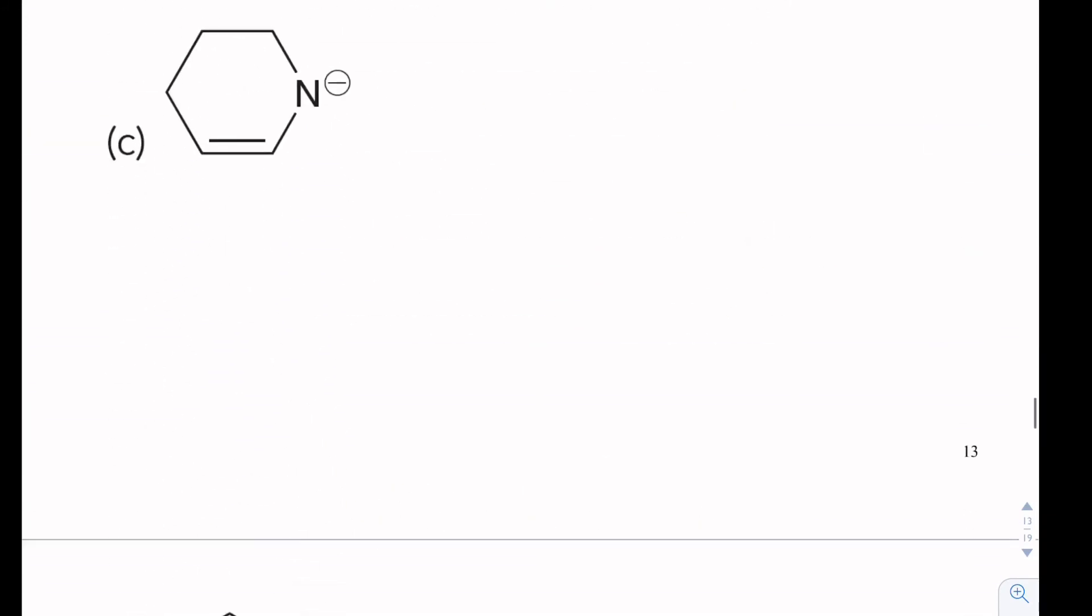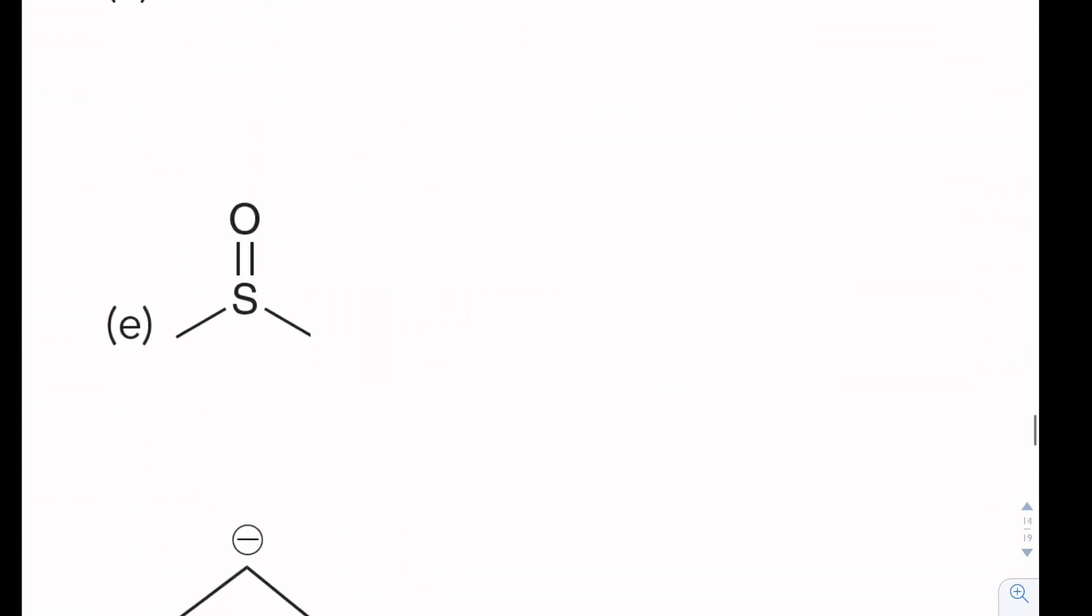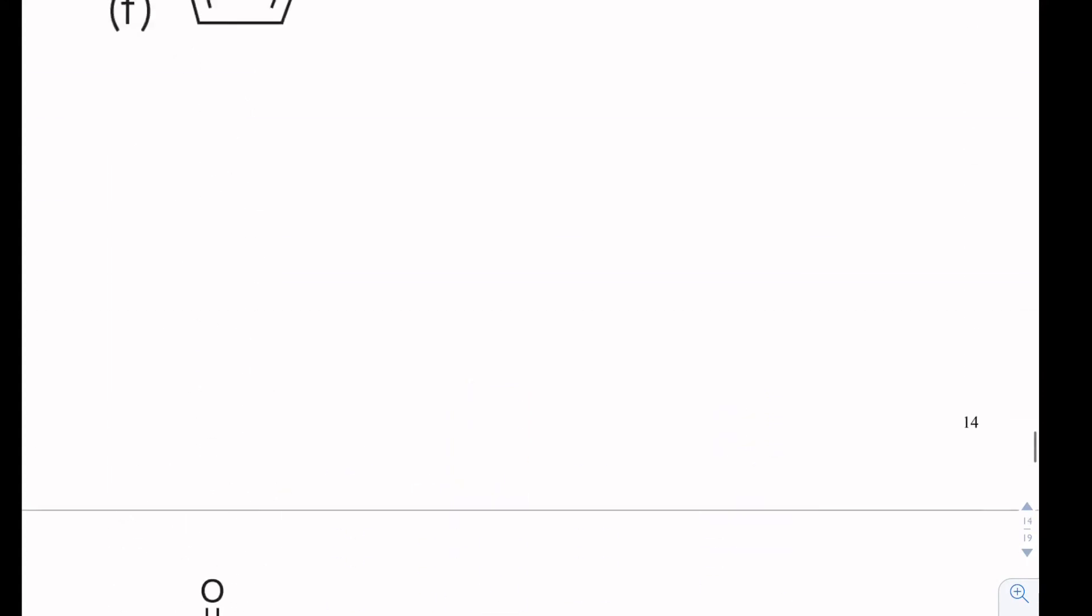So let's look at H. We have a positive charge. We'll move electrons towards a positive charge in a double bond. And we can do that again and again. So we get something that looks like this. One arrow for our positive charges.